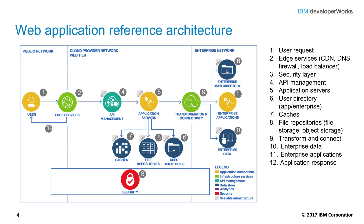Enterprise data includes systems of record and metadata about the data for enterprise applications. The web application server may need to access the database and query data to generate the requested response. Enterprise applications include applications that accomplish business goals and can interact with cloud services through the transformation layer. Finally, the response from the web application tier is returned to the user over the internet via the edge services.